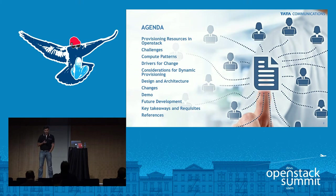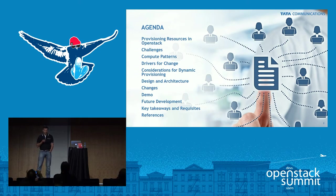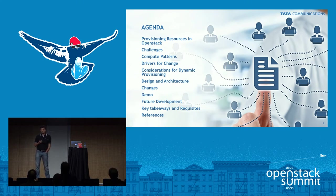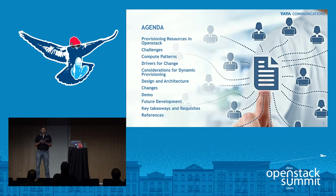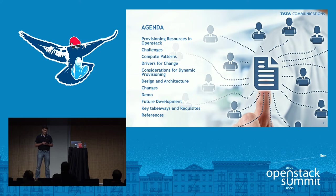Today we'll talk about provisioning resources in OpenStack — how resources are currently provisioned. We'll quickly go through the challenges with current approaches, the different compute patterns we've seen, and why we need to change from static over-provisioning to dynamic performance-based provisioning. We'll see that we are not actually over-provisioning but right-sizing and optimally using resources. We'll cover considerations for dynamic provisioning, including different resources, VMs, groups, what monitoring to do, and what we have done out of those considerations.